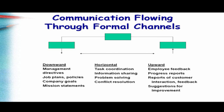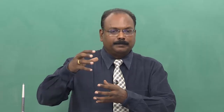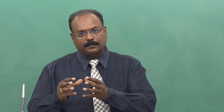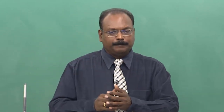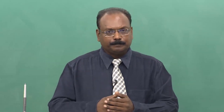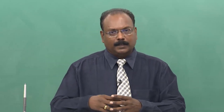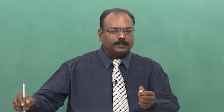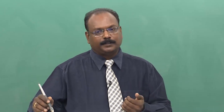There is also the upward form which some companies use effectively. They will start with suggestions for improvement, go by feedback from clients, from workers, from lower-level people, and then take it up further with reports of customer interaction, their feedback, progress reports, and employee feedback. They try to synchronize these with the company's goals, objectives, mission statements, and directives. Some companies use downward very effectively, some use upward effectively, but in the current scenario most flexible organizations go for the horizontal model.